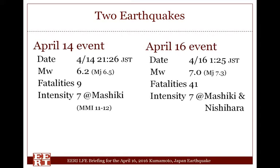The second earthquake occurred on April 16th, and the moment magnitude was 7. 41 people died, not only due to the collapse of housing, but also landslides and changes in health conditions after the earthquake. The maximum JMA seismic intensity was 7 in Mashiki town and Nishihara village. The intensity level 7 is the largest scale in the JMA intensity scale.